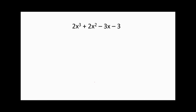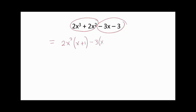Let's look at a second example. Here I'm going to group these two terms and these two terms separately. From the first pair, I pull out 2x squared to get 2x squared(x plus 1). Then from the second pair, I pull out negative 3 to get negative 3(x plus 1). Now we have a common factor (x plus 1), which we pull out, leaving (x plus 1)(2x squared minus 3).